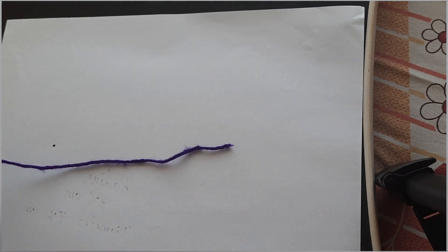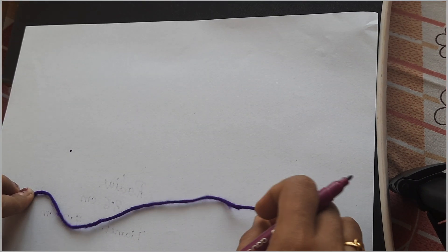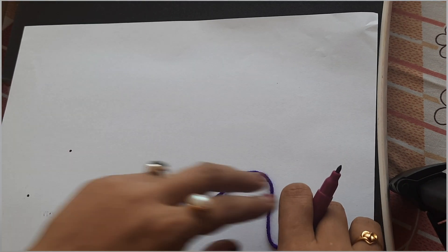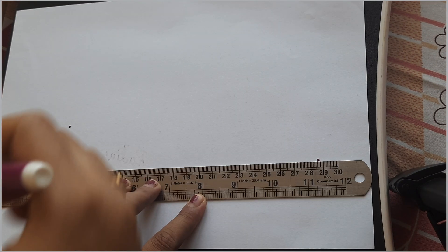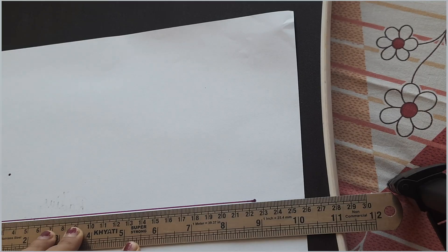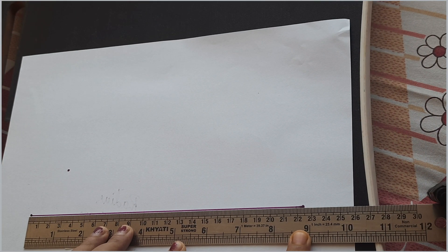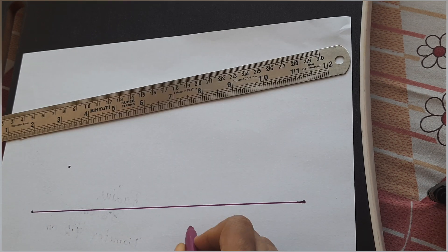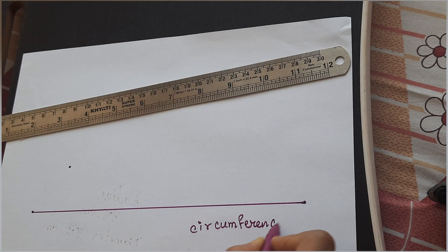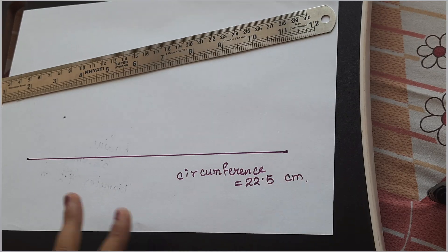For that I will fix the first point, initial point and hence the terminal point and I will join those two lines by a scale and then I will measure the length. And here I am getting the length near about 22.5 centimeters. Hence circumference of the bangle is equal to 22.5 centimeters.